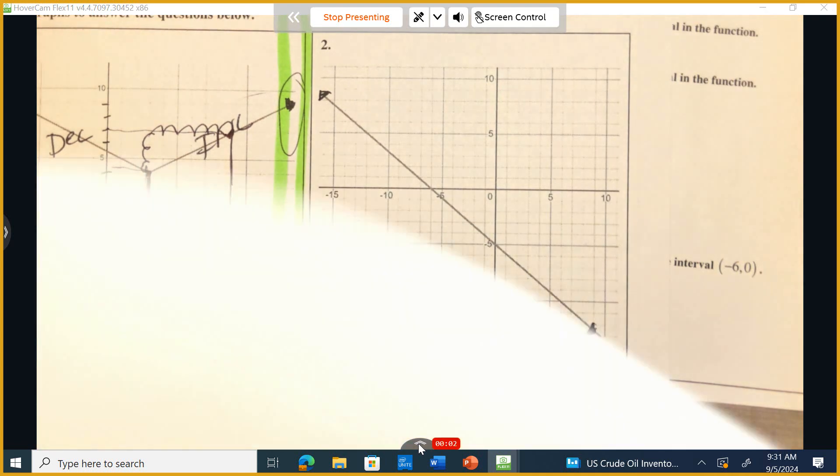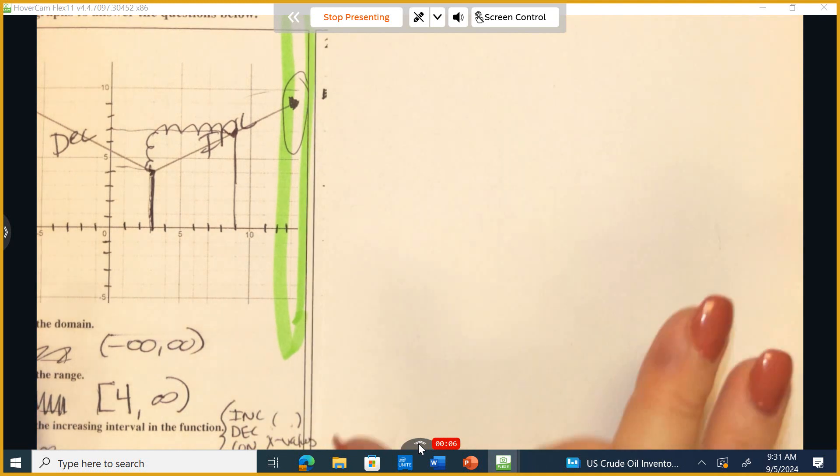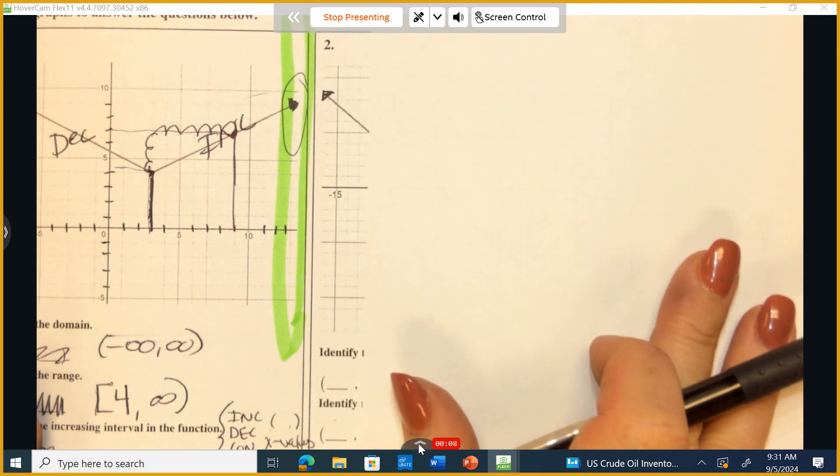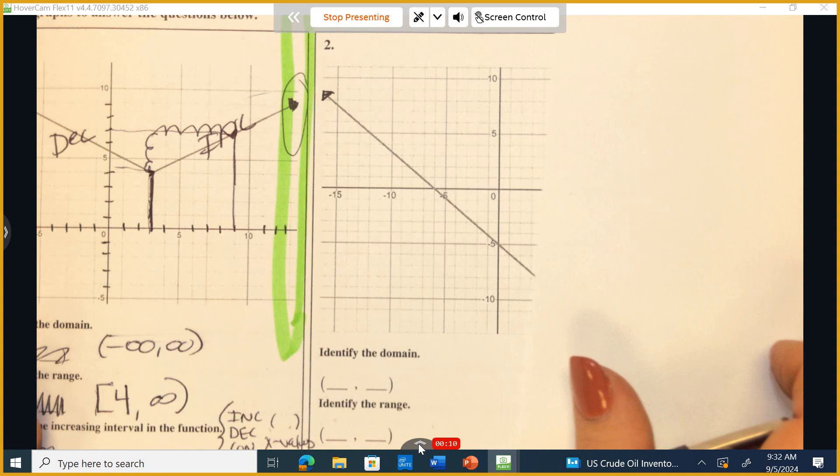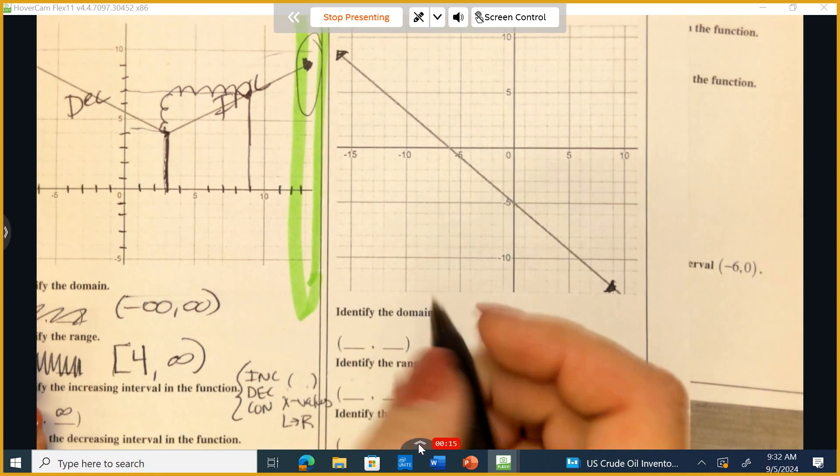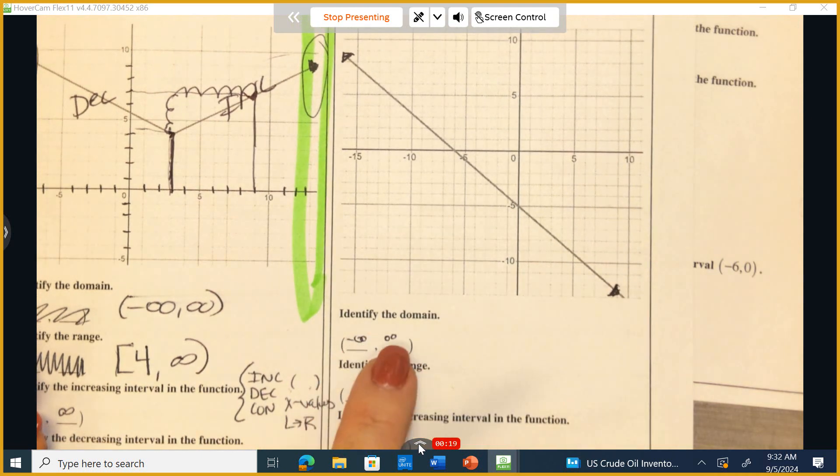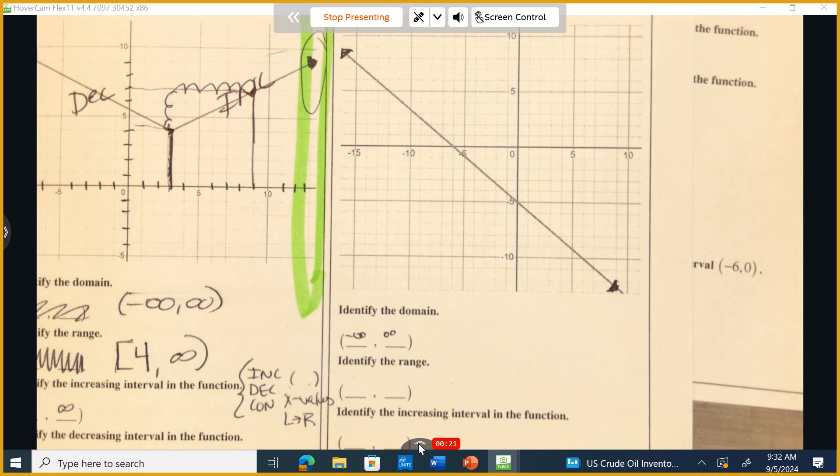Number two, let's do domain and range. So I'm going to go from left to right looking at the domain here. As I go from left to right, I see the graph the entire way. So how do I describe this? I'm not going to write all real numbers because we're using this notation. So it's negative infinity to positive infinity. Make sure the negative goes first and the positive goes second, and you're using parentheses.